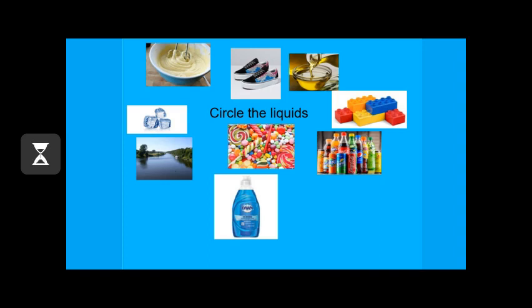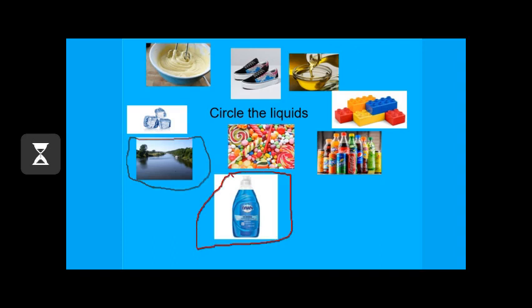She's pouring the oil out and it's going into the bowl, and now it takes the shape of the bowl. But oil is still a liquid. What are our other liquids? The river, of course — that's one of our biggest liquids here. Very good job. The dish detergent — awesome. The dish detergent is taking the shape of the bottle, and when it's poured onto the sponge and water is added to it, it becomes bubbly and you're able to clean your dishes.